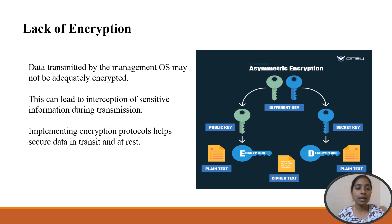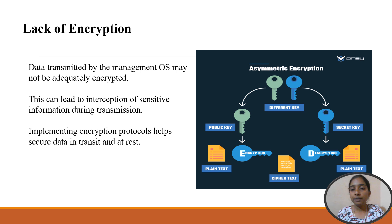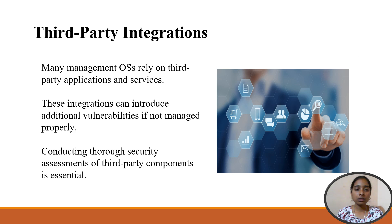Let us discuss lack of encryption — the data transmitted by the management OS may not be adequately encrypted, and this can lead to interception of sensitive information during transmission. Implementing encryption protocols helps secure data in transit and also at rest. Asymmetric encryption uses different keys for encryption and decryption.